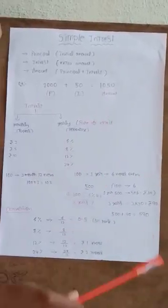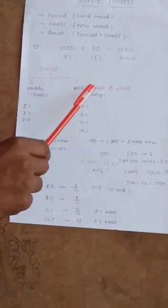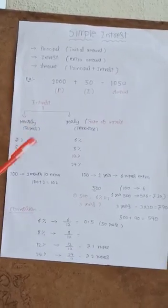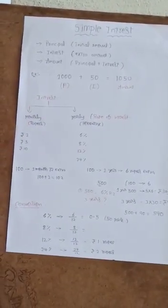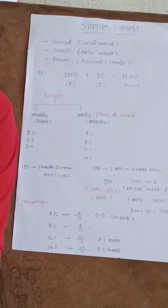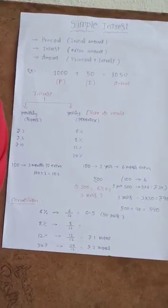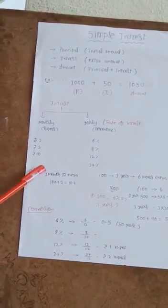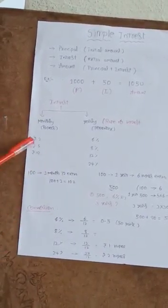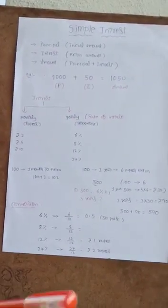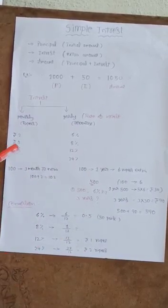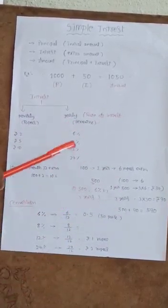Rate of interest is used in calculations. Monthly interest means, for example, 2 rupees interest means per month for 100 rupees, you pay 2 rupees extra. That is called 2 rupees interest. Similarly, 5 rupees interest means per month for 100 rupees, you pay 5 rupees extra. That means you have to pay 105 rupees. This is monthly interest.